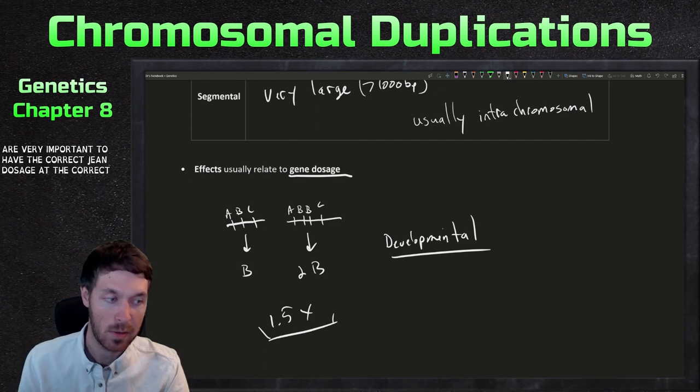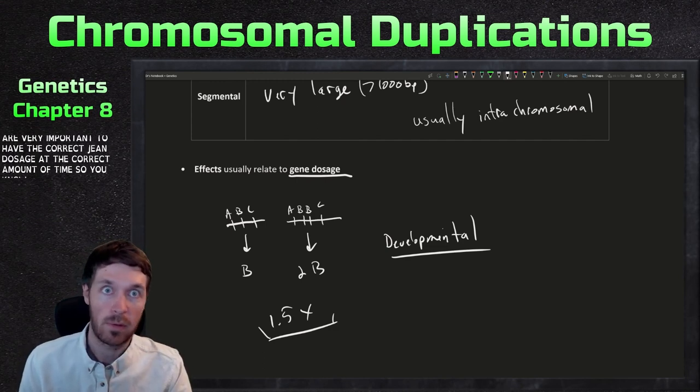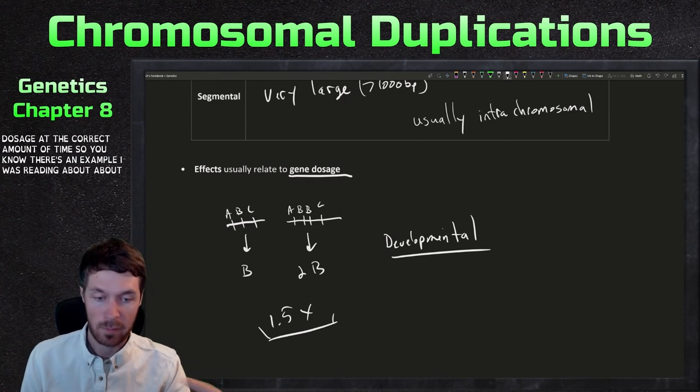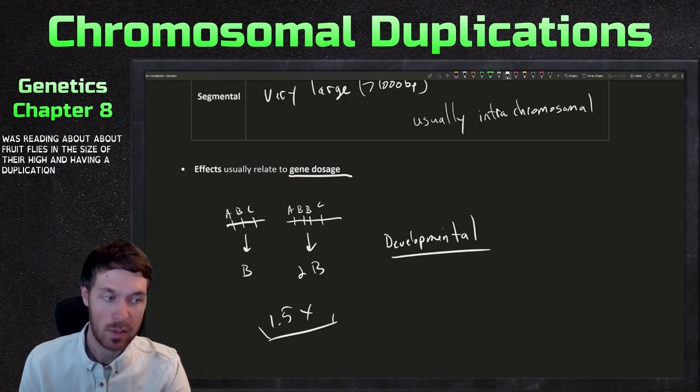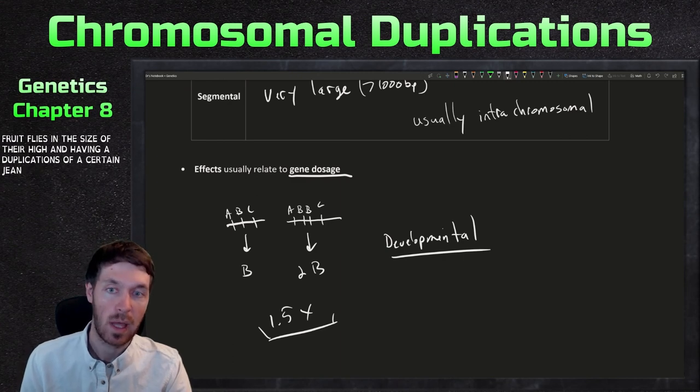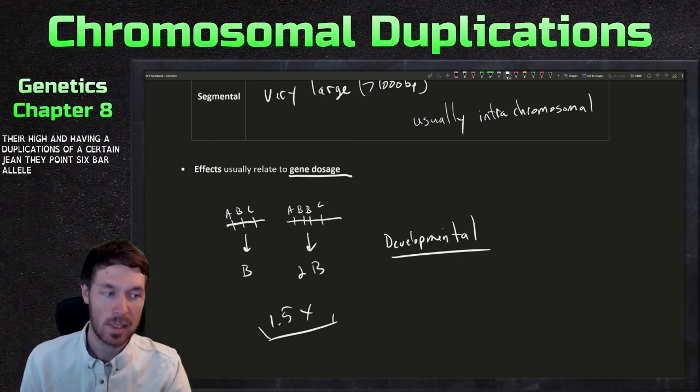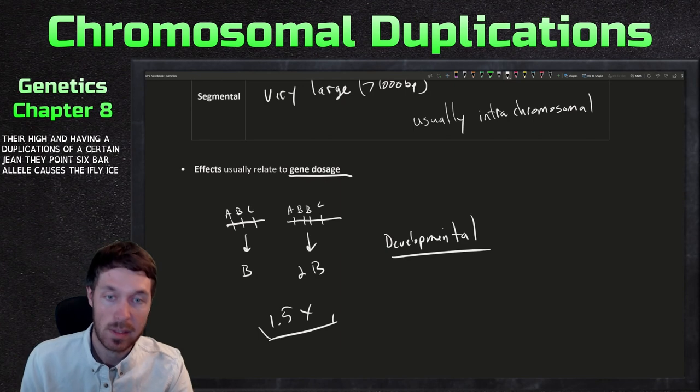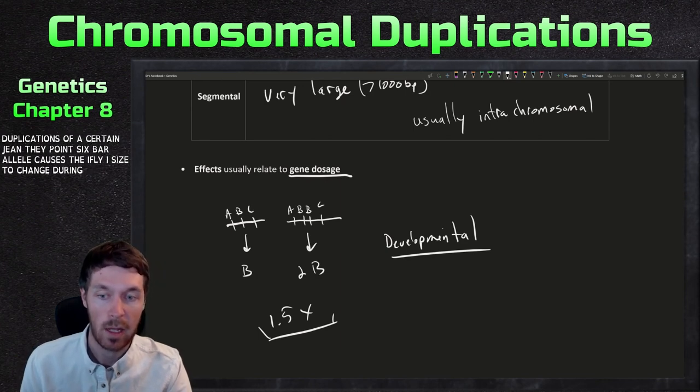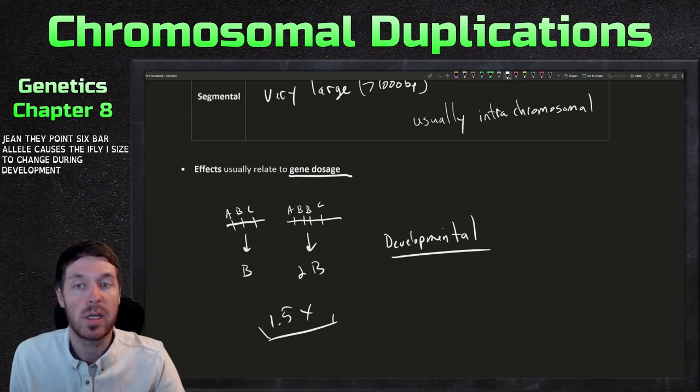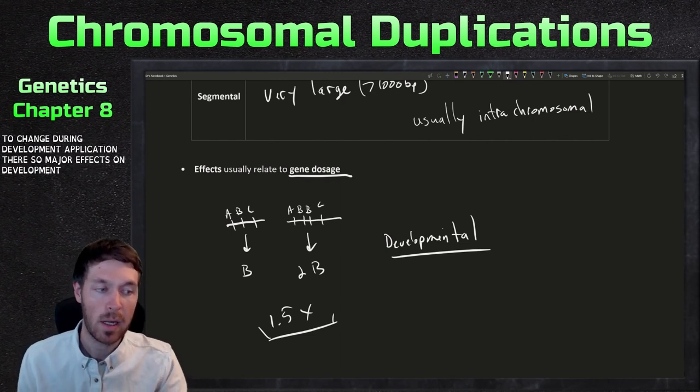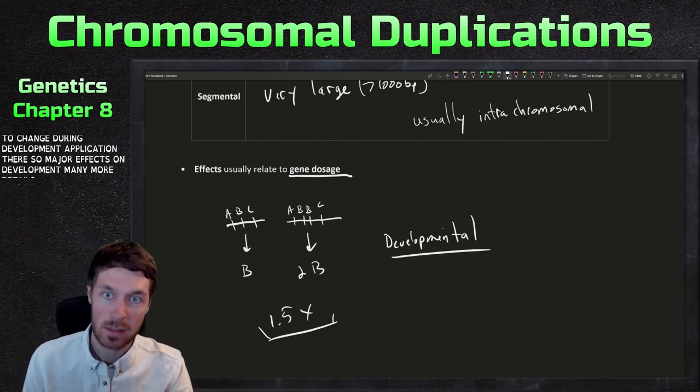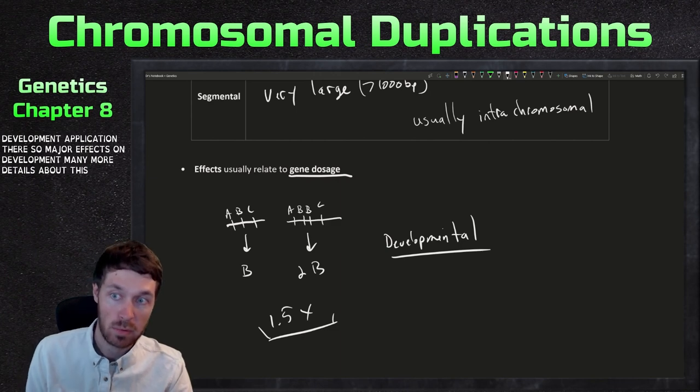So there's an example I was reading about, about fruit flies and the size of their eye and having a duplications of a certain gene. The 8.6 bar allele causes the fruit fly eye size to change during development. And that's just a one little gene duplication there. So major effects on development. I'm not going to go into too many more details, but this third allele can pose problems.